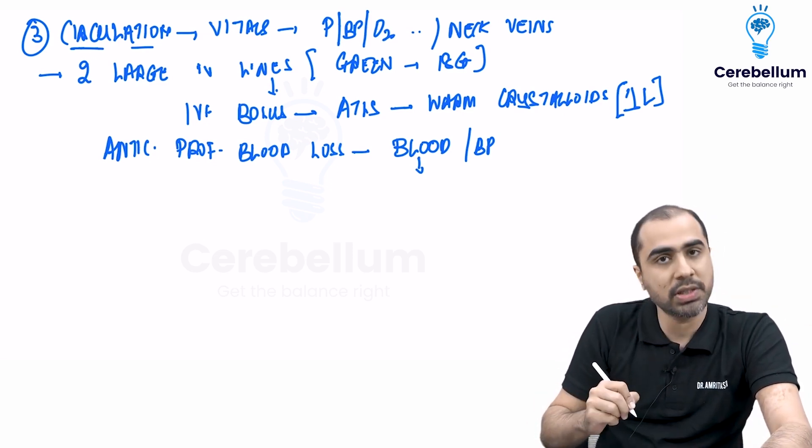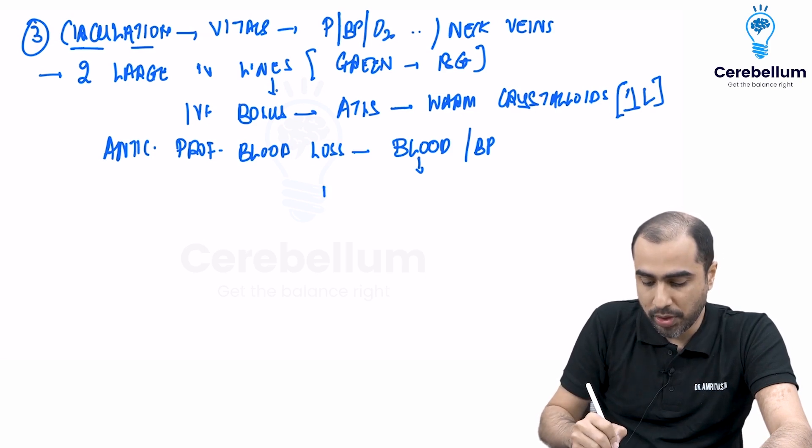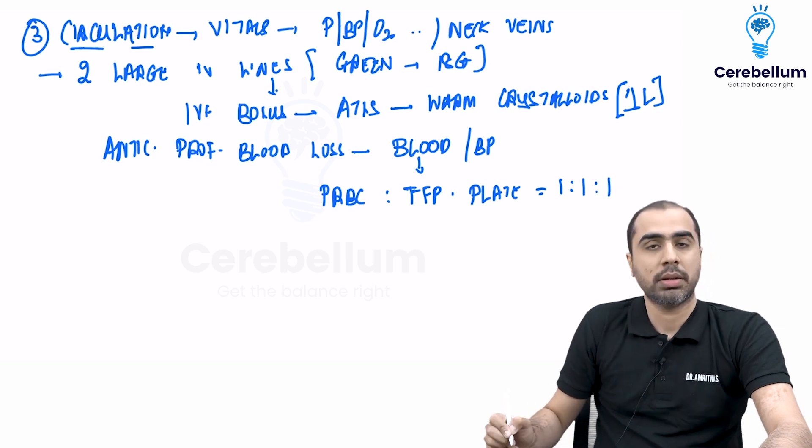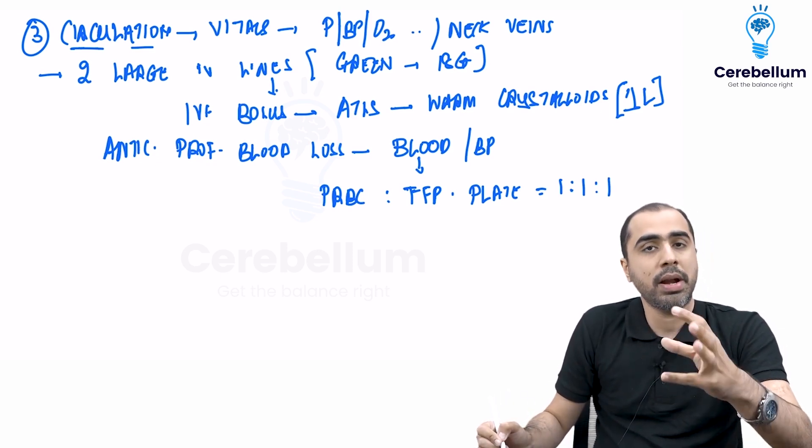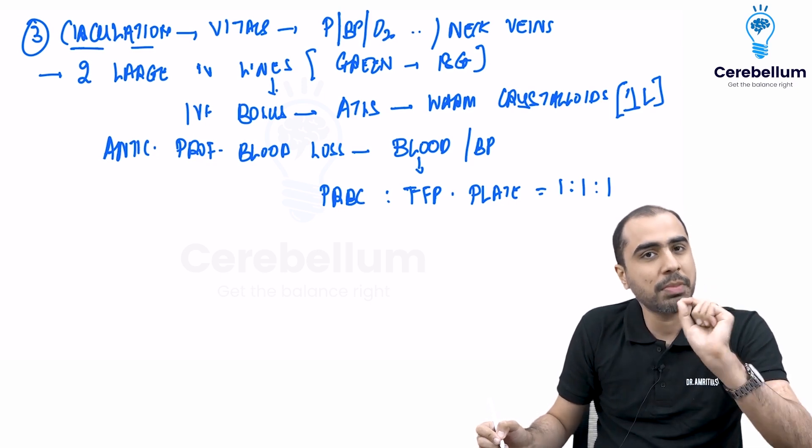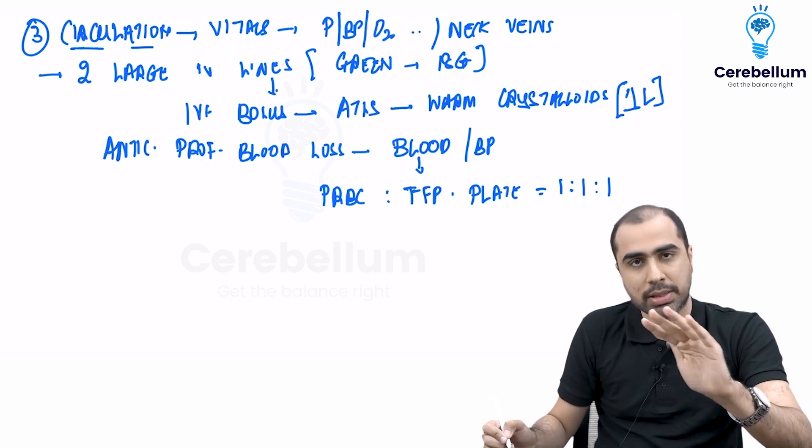I go for massive transfusion protocol where I am going to give him packed RBCs to FFP to platelet in the ratio 1:1:1. This is going to be done if I am anticipating profound hypovolemia.